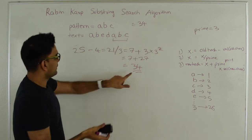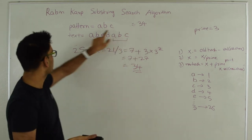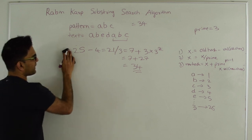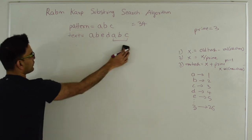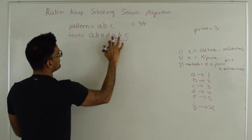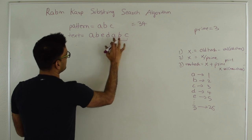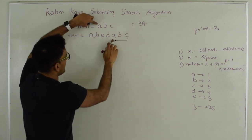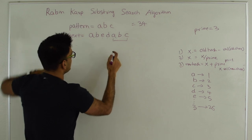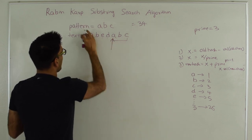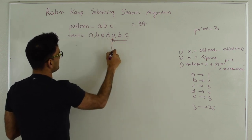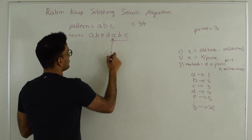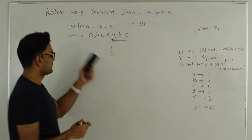Once we find a hash match, we compare this substring with the pattern. A matches A, B matches B, and C matches C. So the pattern exists in this text at this location — counting positions 0, 1, 2, 3, 4 — this should return index 4. Hopefully this helps you understand how pattern matching works using Rabin-Karp's algorithm.